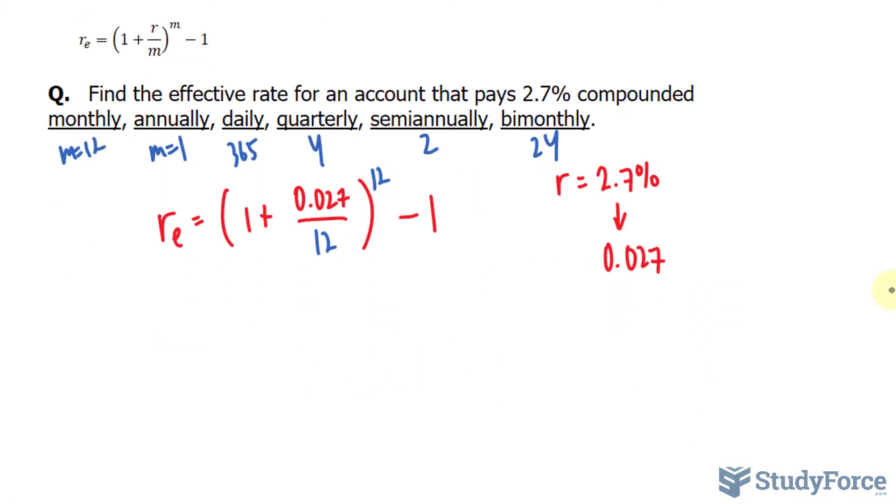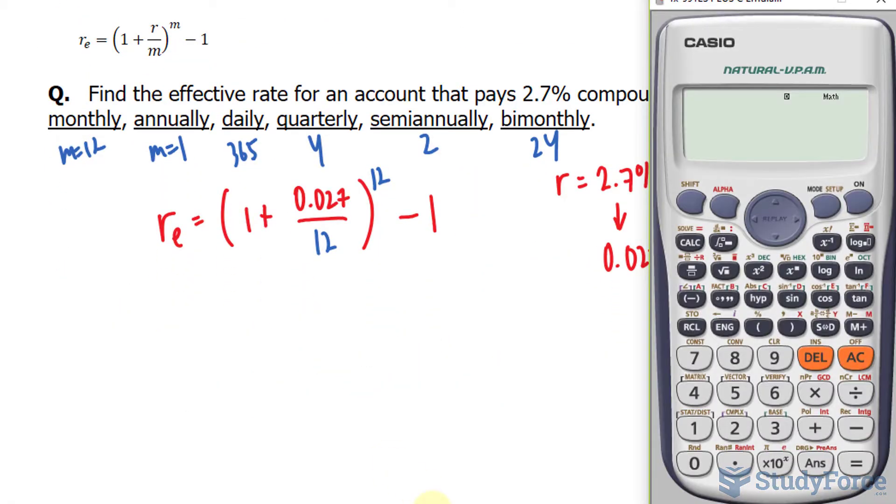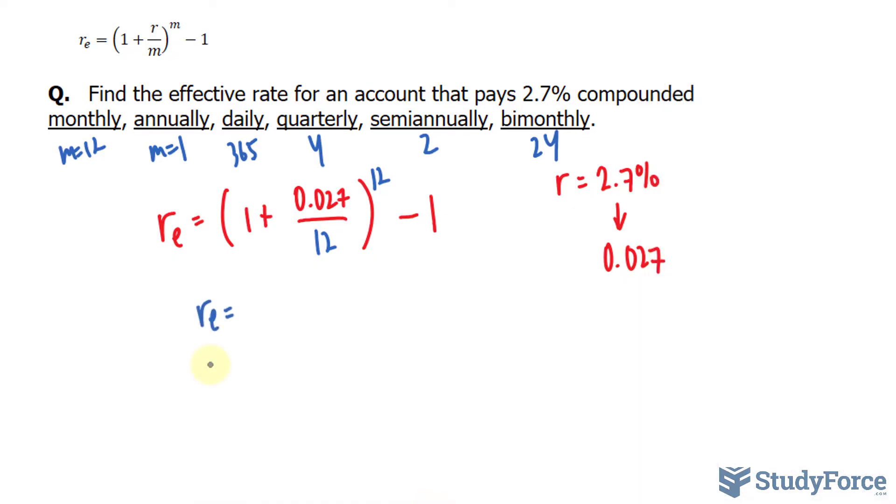Let's go ahead and calculate the monthly. We have 1 plus 0.027 divided by 12. Close the bracket. Raise that to the power of 12 minus 1. We end up with 0.027. And you want to convert this into a percentage. So you multiply by 100, 2.73%. So the effective rate is approximately 2.73%.